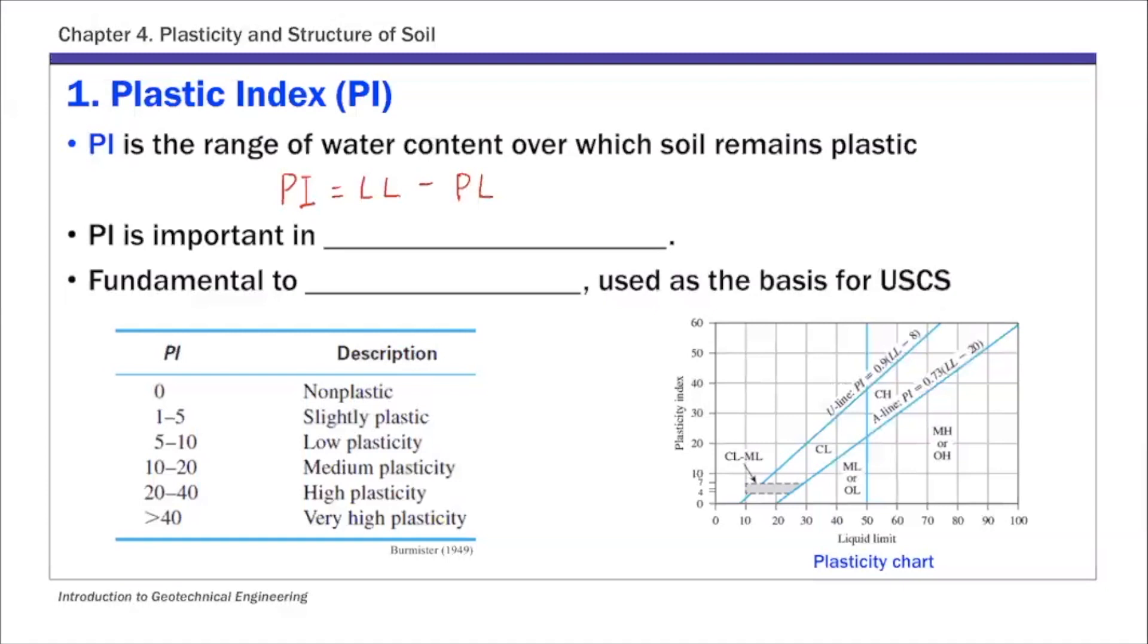LL again is liquid limit and PL is plastic limit. So that's the range of water content over which soil remains plastic. And this PI is important in classifying fine-grained soils. Next week we're going to talk about soil classification and you will see that PI is an important index used to classify fine-grained soils.